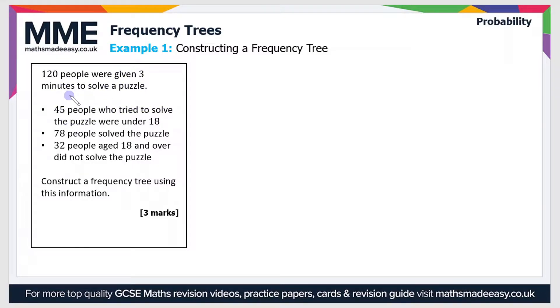120 people were given 3 minutes to solve a puzzle. 45 people who tried to solve the puzzle were under 18. 78 people solved the puzzle. 32 people aged 18 and over did not solve the puzzle. Construct a frequency tree using this information. Now all this data seems quite jumbled up, and that's because it is a bit jumbled up, but we can start by dividing our data into two categories.